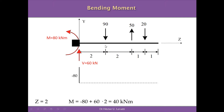Going to point z equal to 2, under the 90 kN load, the moment is minus 80 kN·m plus 60 kN times 2 meters, which is positive because it's clockwise. Doing the operation, the moment at this point equals 40 kN·m, a positive value. We sketch this below the reference line following our conventions, and since we have only punctual loads, we connect minus 80 and 40 with a linear function.